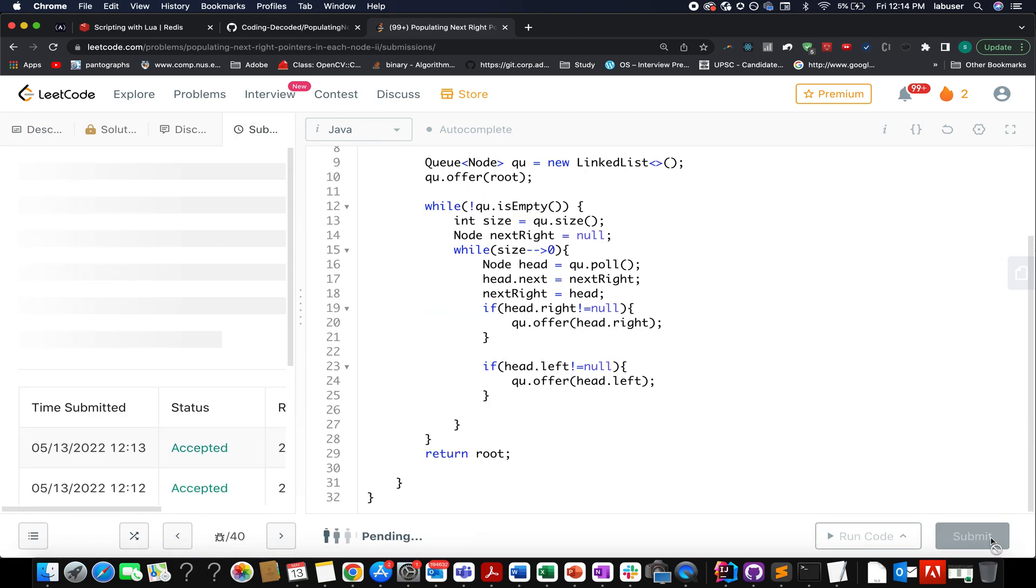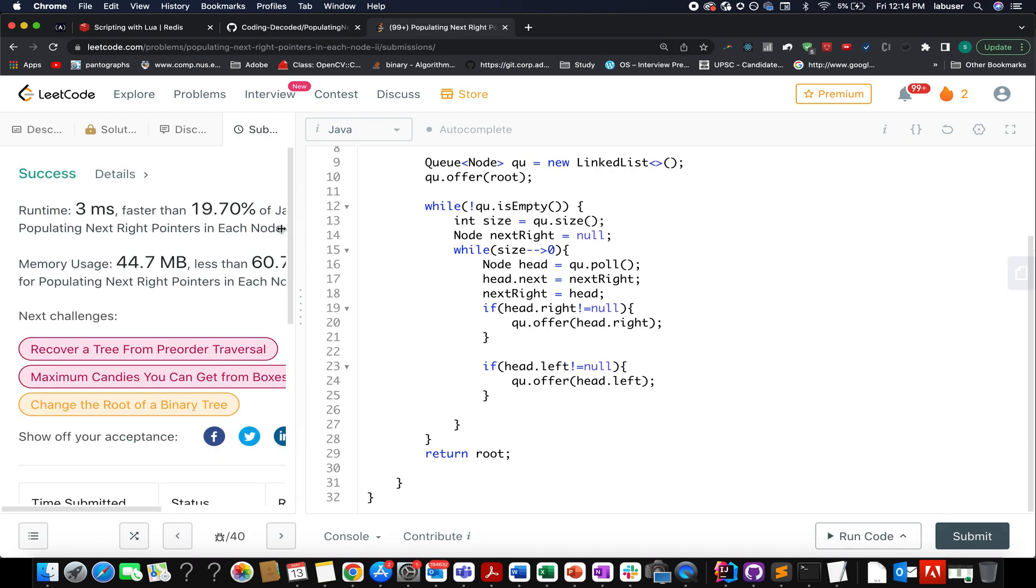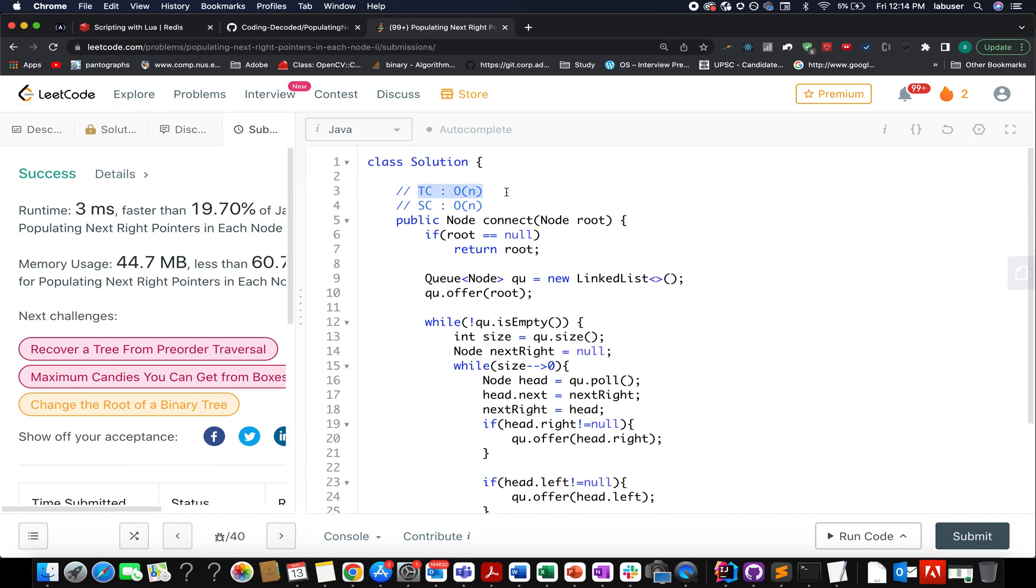So let's submit this. It's fine. I guess I am connected to VPN and hence you're seeing the delay, but it can't be improved further because the time complexity of this approach is order of n and the space complexity is again order of n. You are visiting each node only once and you are using a queue. Therefore, the space complexity becomes order of n.